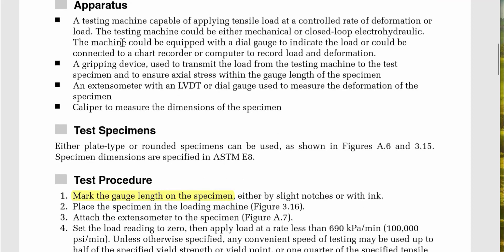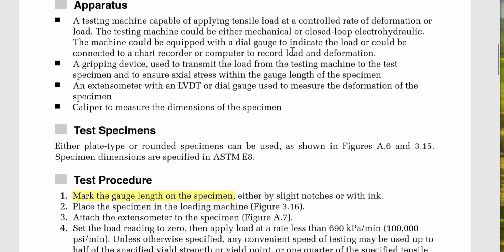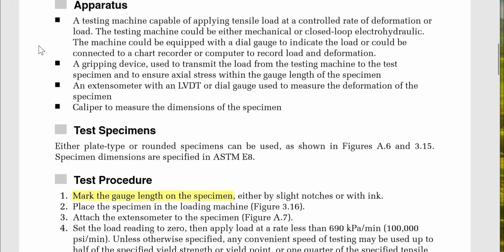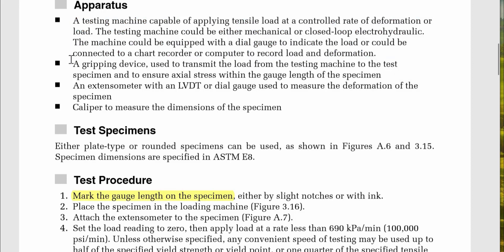The apparatus used for this experiment includes a testing machine capable of applying tensile load at a controlled rate of deformation or load. We are going to use our UTM machine in the laboratory. The testing machine can be either mechanical or closed-loop electro-hydraulic, and may be equipped with a dial gauge, chart recorder, or computer to record load and deformation. We start by setting up the machine and then beginning the load rating.